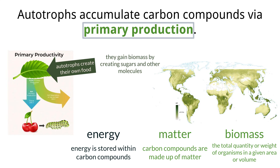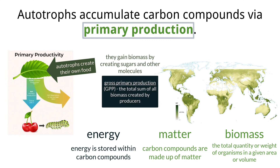Autotrophs are creating organic compounds from inorganic materials that end up supporting the entire ecosystem. The total amount of biomass that autotrophs produce within an ecosystem is called gross primary production, abbreviated GPP. These autotrophs use the carbon compounds they create for the process of cell respiration, which uses biomass and the energy stored within it.